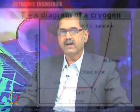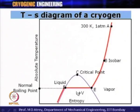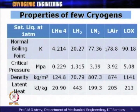To liquefy a gas, the pressure must be less than the critical pressure so one can enter the two-phase dome. Only when temperature is below the critical temperature and pressure below the critical pressure can one obtain liquid plus vapor, from which liquid can be separated. Now let us look at the actual T-S diagrams for specific cryogens.